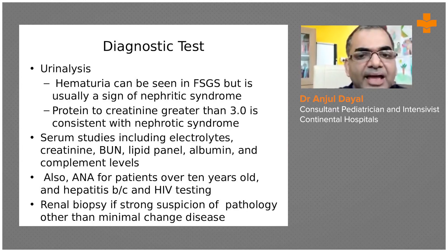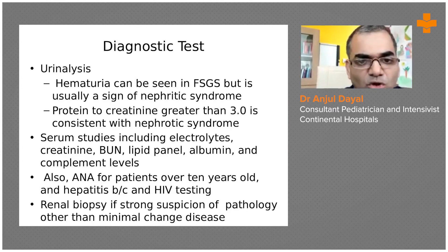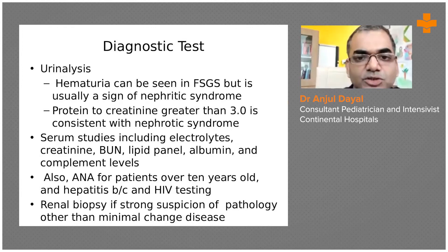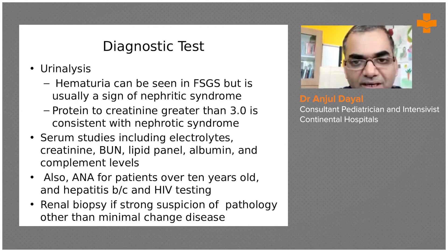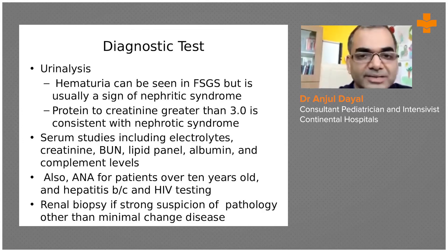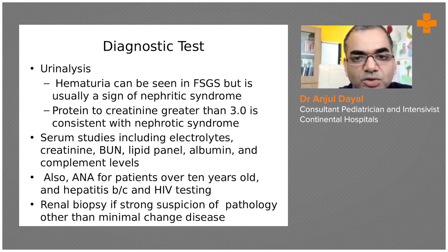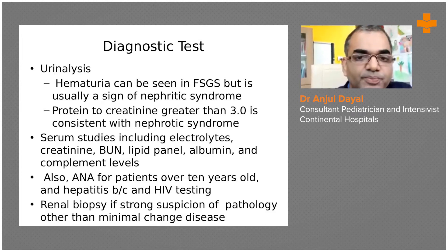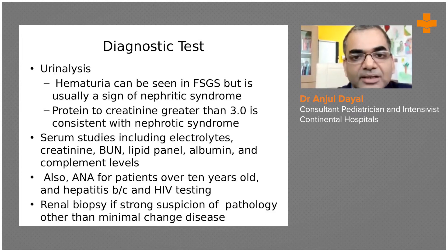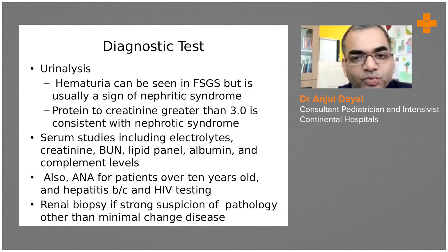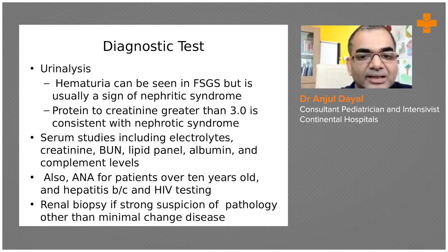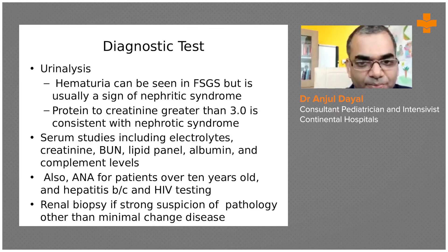A little more emphasis on urine analysis: apart from proteinuria, we are looking for hematuria. If there is associated hematuria or acanthocytes in the urine, it points to either post-streptococcal nephritis or membranoproliferative type of nephrotic syndrome.